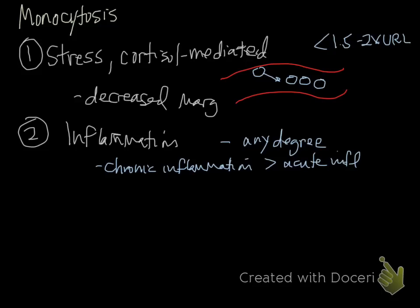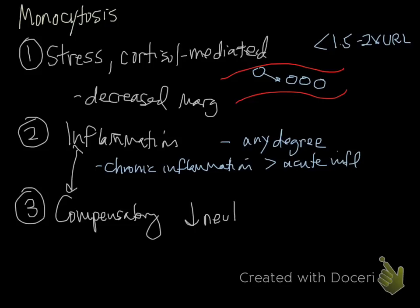The last cause is something called compensatory monocytosis, which really happens with inflammation. We see this with neutropenia. It has to do with the shared progenitor. You always have some need for neutrophils in the body, so if you're very neutropenic, regardless of the cause, your body's going to want you to make more neutrophils even if you can't make them. That's going to stimulate monocyte production, so you can see an increase in monocytes secondary to that. It may be compensatory and usually also has an inflammatory cause.